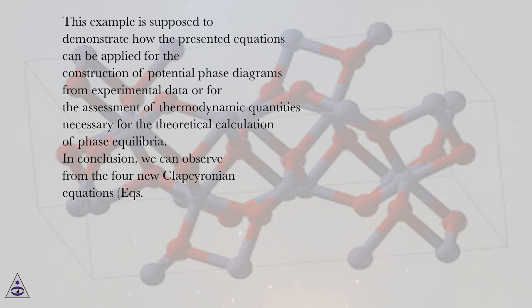This example demonstrates how the presented equations can be applied for the construction of potential phase diagrams from experimental data or for the assessment of thermodynamic quantities necessary for the theoretical calculation of phase equilibria. In conclusion, we can observe from the four new Clapeyron equations (Eqs. 1 and 2)...